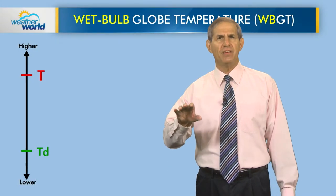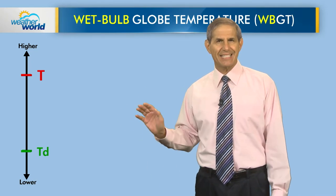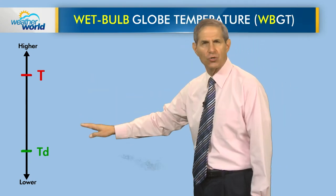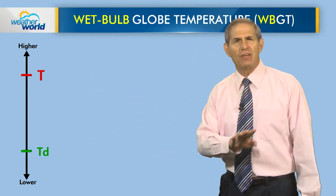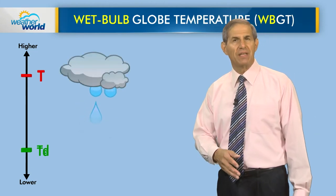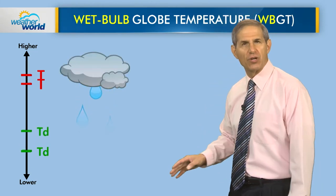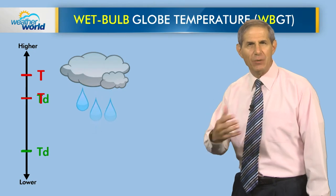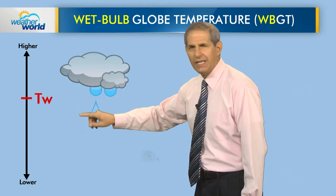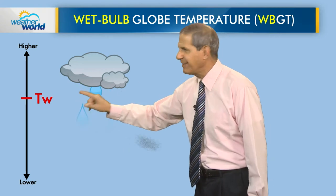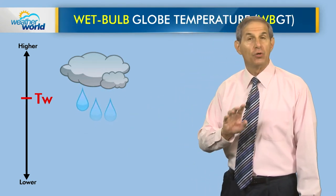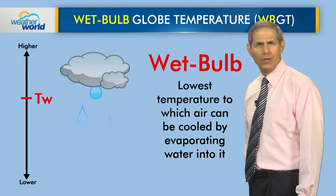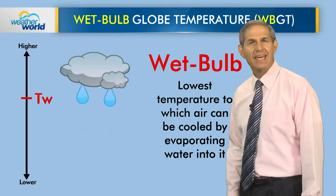Let me break down the WBGT for you. First, the wet bulb part. Let's say you know the temperature and dew point of air — shown here on a scale with T for temperature and TD for dew point. Now let's say that rain falls into the air. Some of the drops will evaporate, which cools the air, so the temperature comes down. But as water evaporates, there's more vapor in the air, so the dew point goes up. And if we take this to the limit, the decreasing temperature and the increasing dew point will meet — and that is the wet bulb temperature. Formally, it's the lowest temperature to which air can be cooled by evaporating water into it. So it incorporates both heat and humidity.